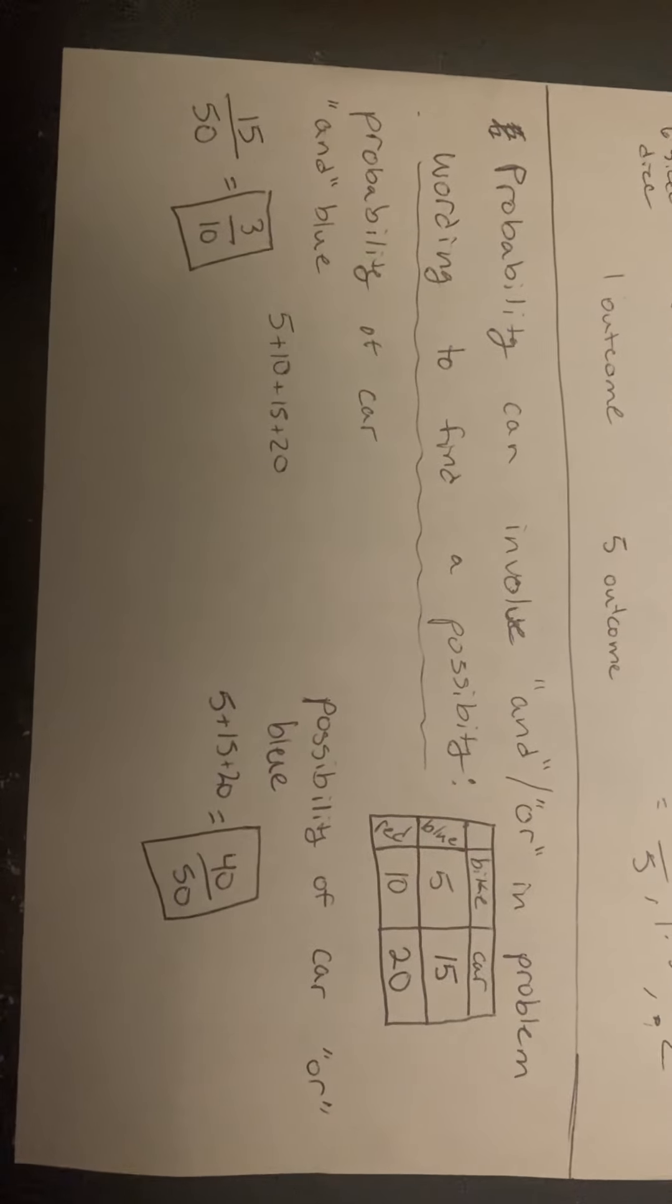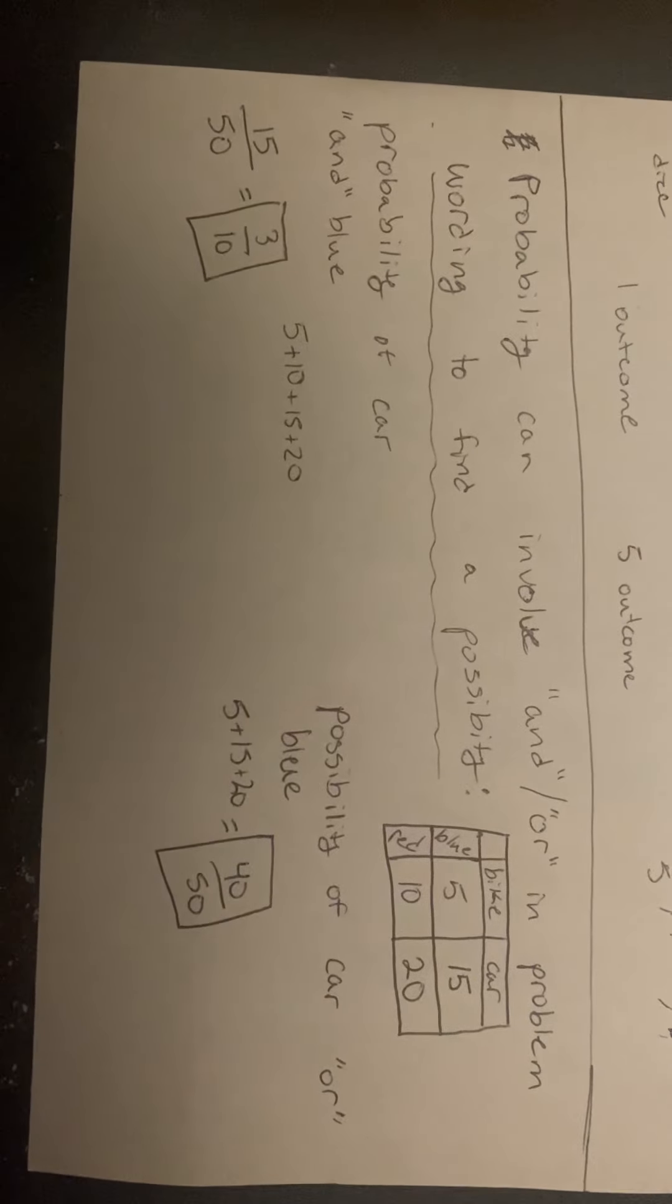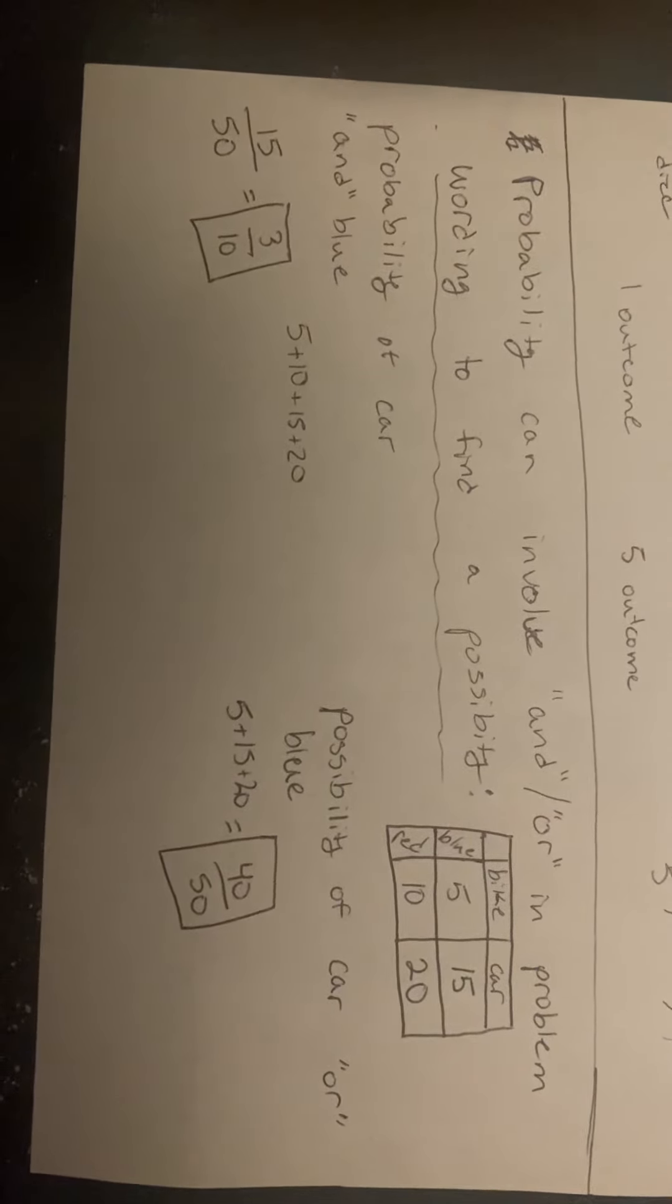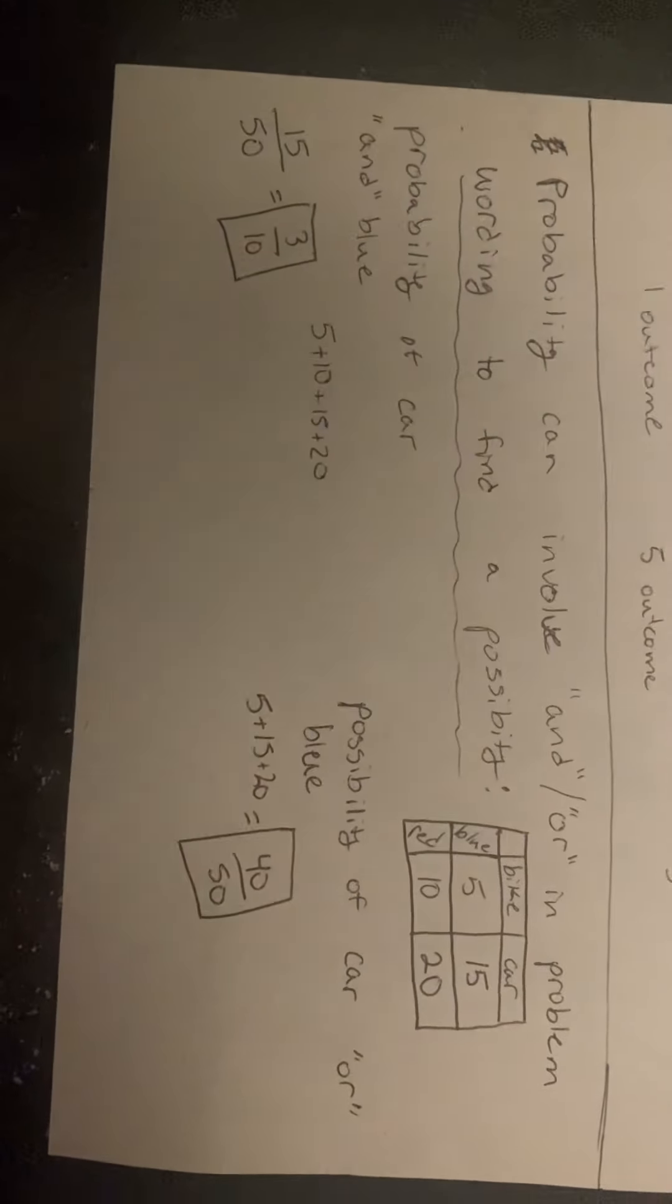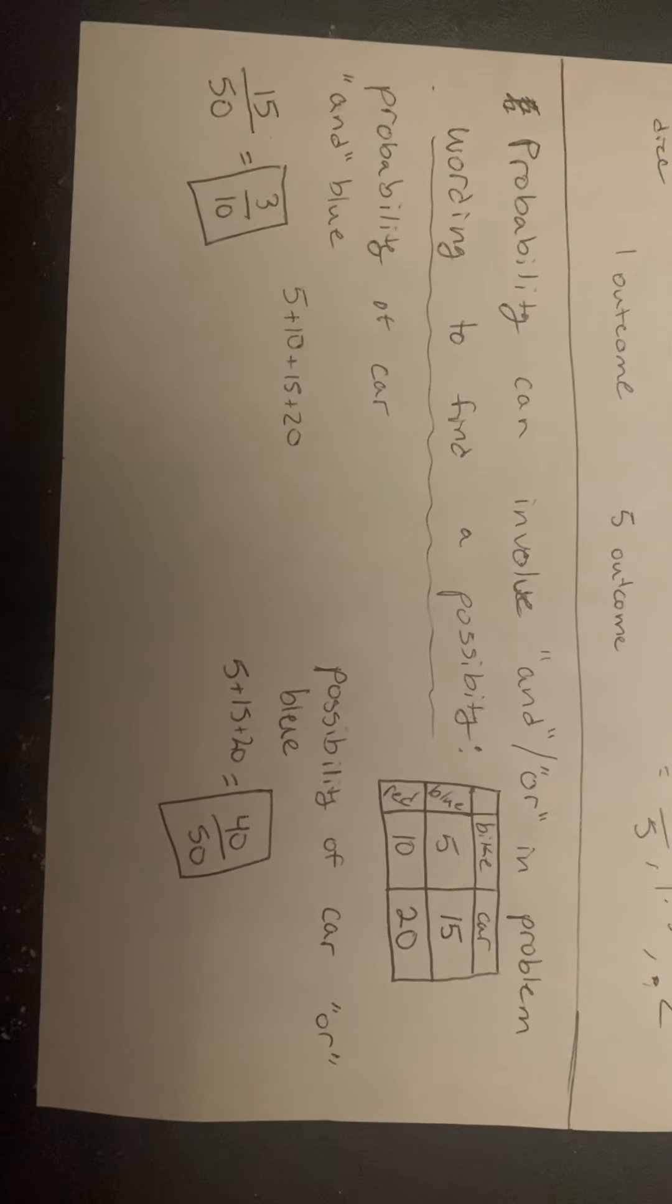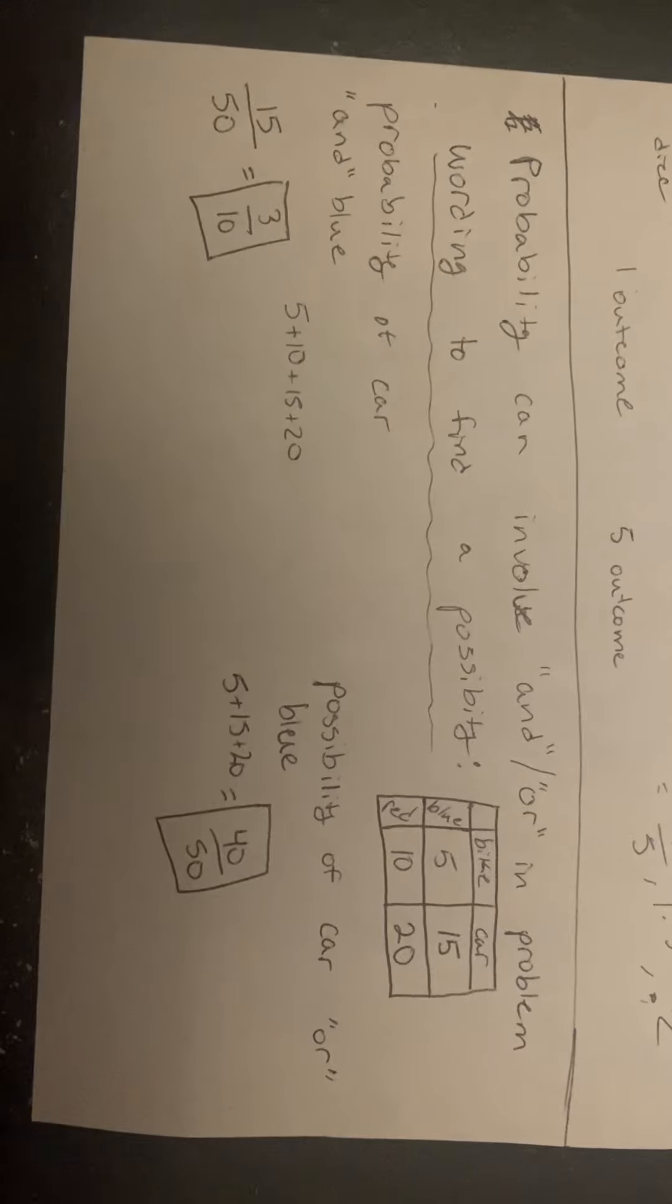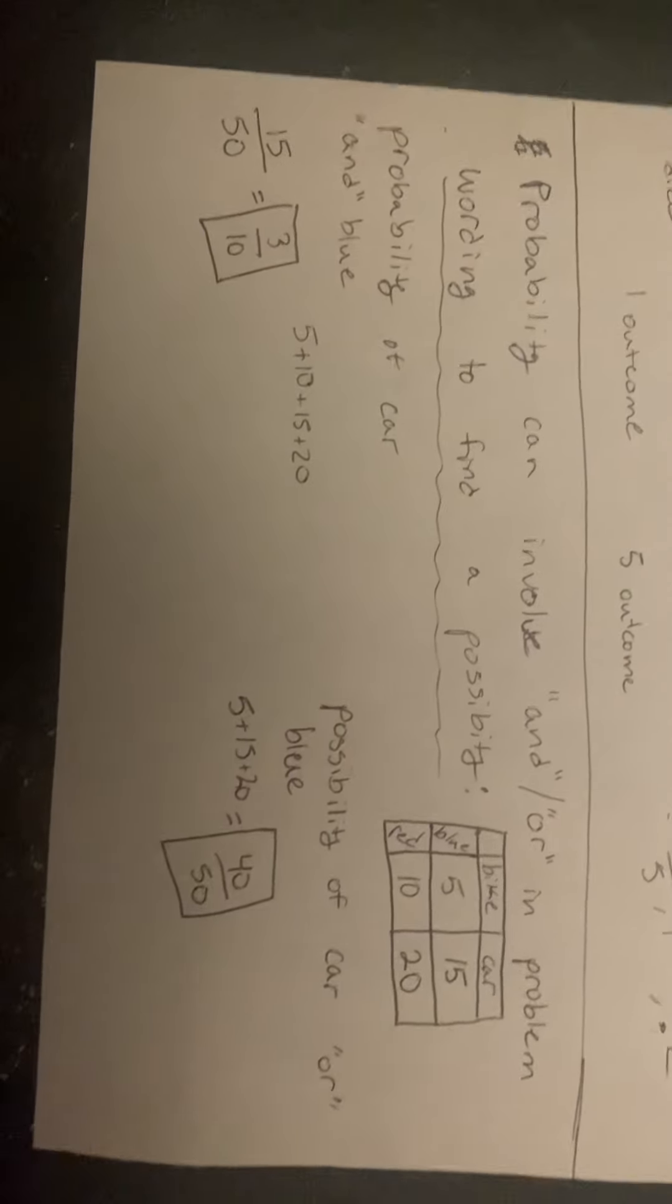Then, we find the outcomes of a car and blue. Looking at the blue bike, we have blue, but it is not a car as well, so we cannot count that value. The only value we can count is car and blue, which is 15.